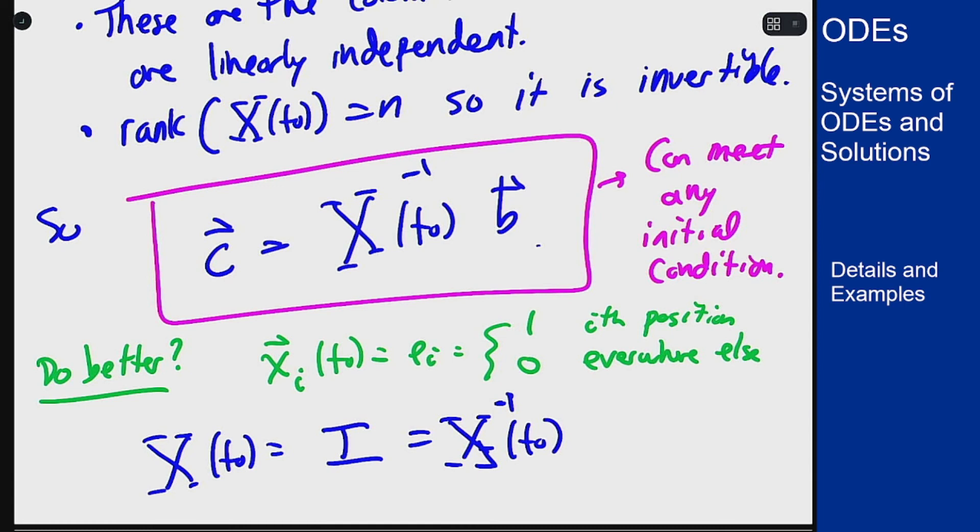So that's the idea of this fundamental matrix and what it is for a problem. It's really just taking the solutions you find via whatever method you do—and we'll do this for other types of problems later on—and putting them into a matrix, stacking them into a matrix. So then you have a single object that contains all of your solutions, and then you can do matrix multiplication to satisfy the initial conditions that you want to meet for a given initial value problem.